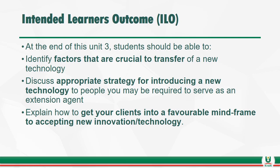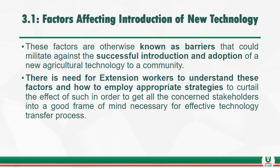At the end of Unit 3, students will be able to identify factors that are crucial to the transfer of a new technology, discuss appropriately strategies for introducing a new technology to people who may be required to serve as an extension agent, and explain how to get your clients into a favorable mind frame to accept new innovation. These factors are otherwise known as barriers that could militate against the successful introduction and adoption of a new agricultural technology to a community.